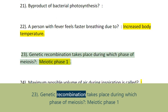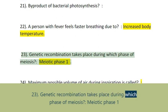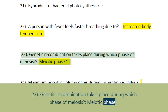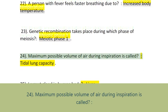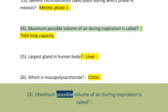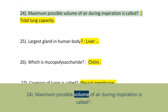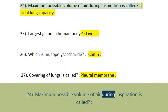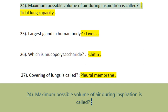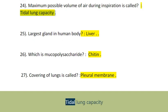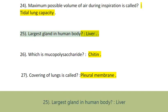Question 23: Genetic recombination takes place during which phase of meiosis? Meiotic phase 1. Question 24: Maximum possible volume of air during inspiration is called tidal lung capacity.